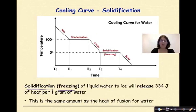Solidification, or freezing, of liquid water to ice will release 334 joules of heat per one gram of water. Again, this is the same amount as the heat of fusion of water, which you would find on table B of your reference table. But instead of absorbing that energy to go from a solid to a liquid, now we're going to release that energy as we go from a liquid to a solid.